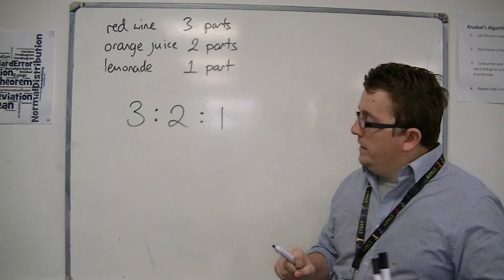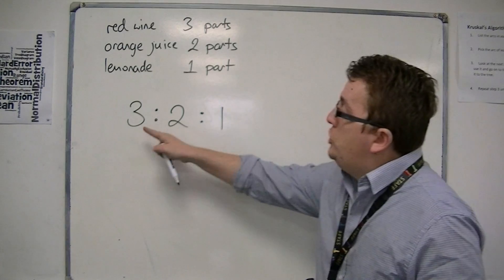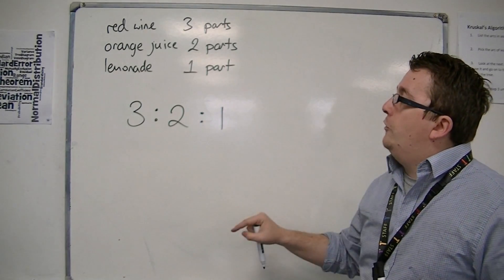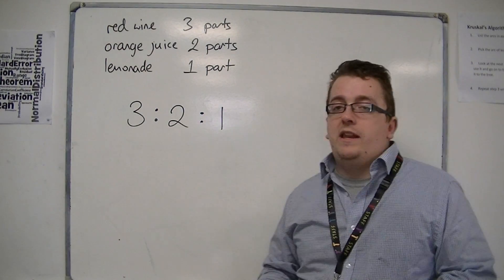And we use the colon to represent a space between the different parts. And it's all about shares, really. So three shares red wine, two shares orange juice, and one share lemonade.